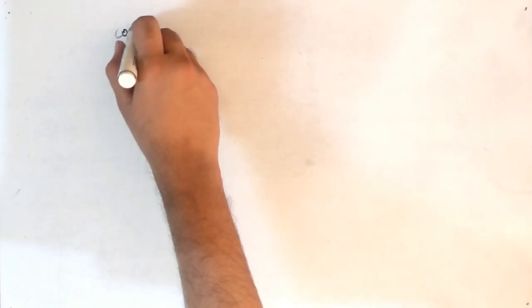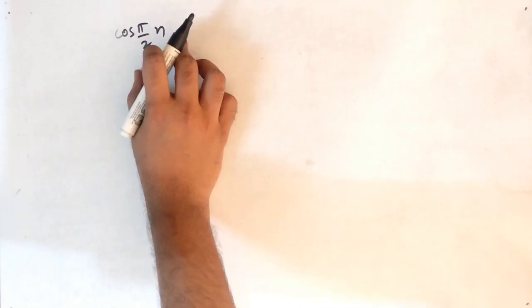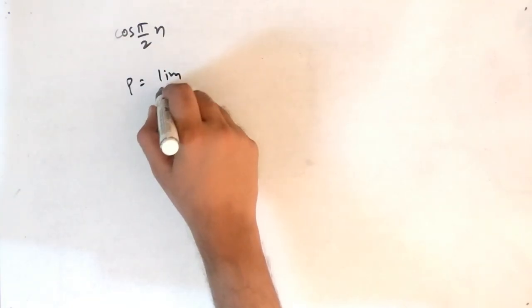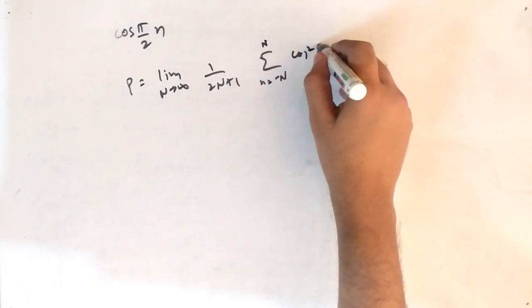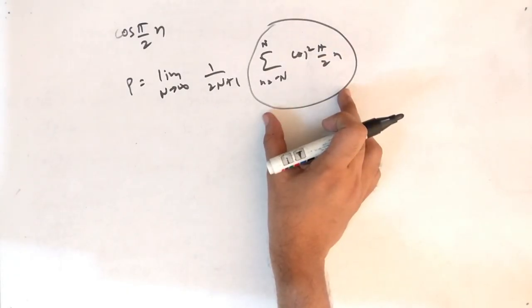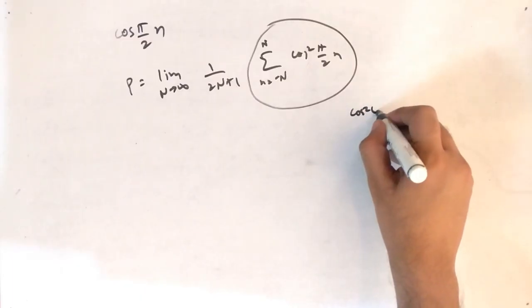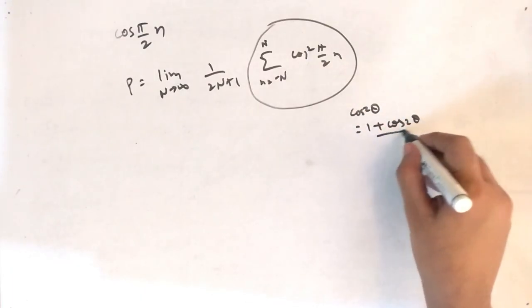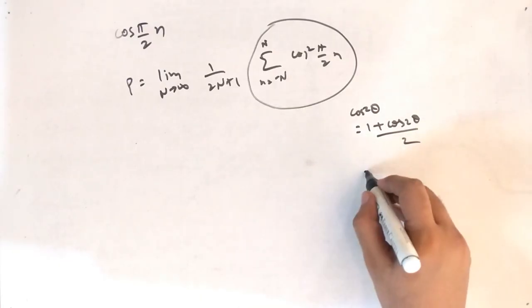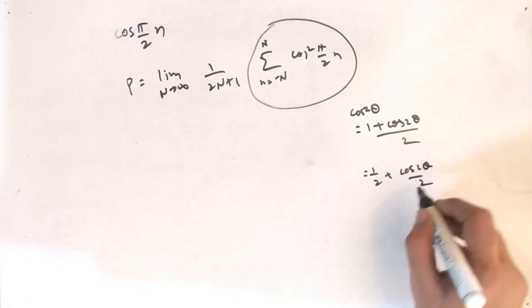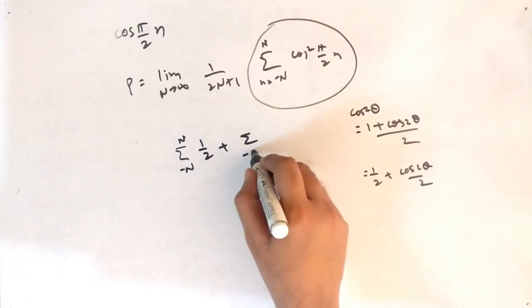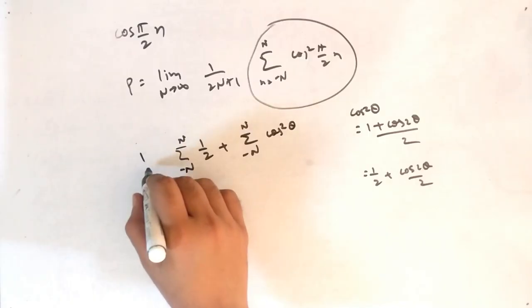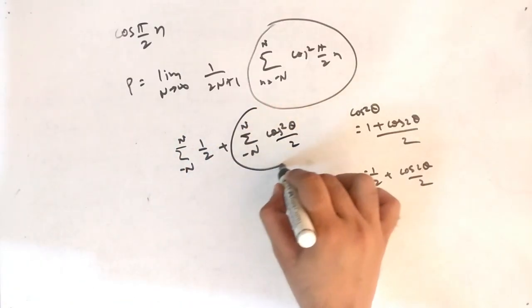Next example: x(n) = cos(π/2 · n). Cosine is periodic, so this is a power signal. Power = lim(N→∞) of (1/(2N+1)) × summation from −N to N of cos²(π/2 · n). Using the trig identity cos²θ = (1 + cos2θ)/2, we split into: summation of 1/2 plus summation of cos(2θ)/2. The cosine summation equals zero.